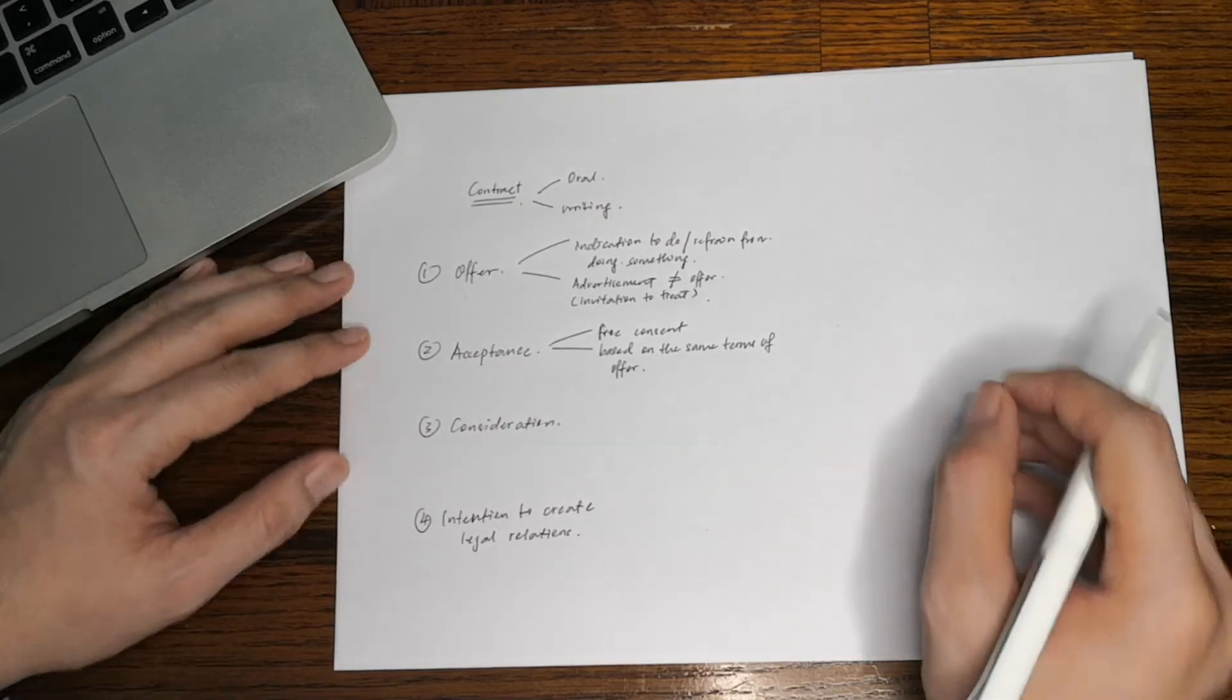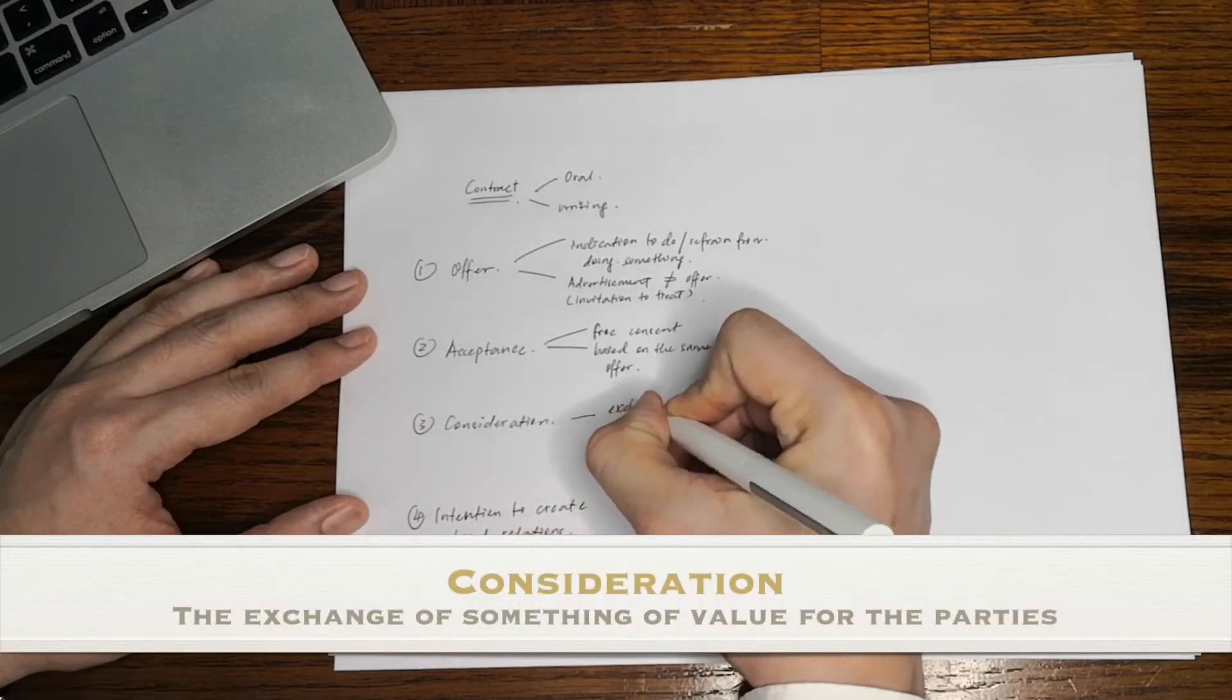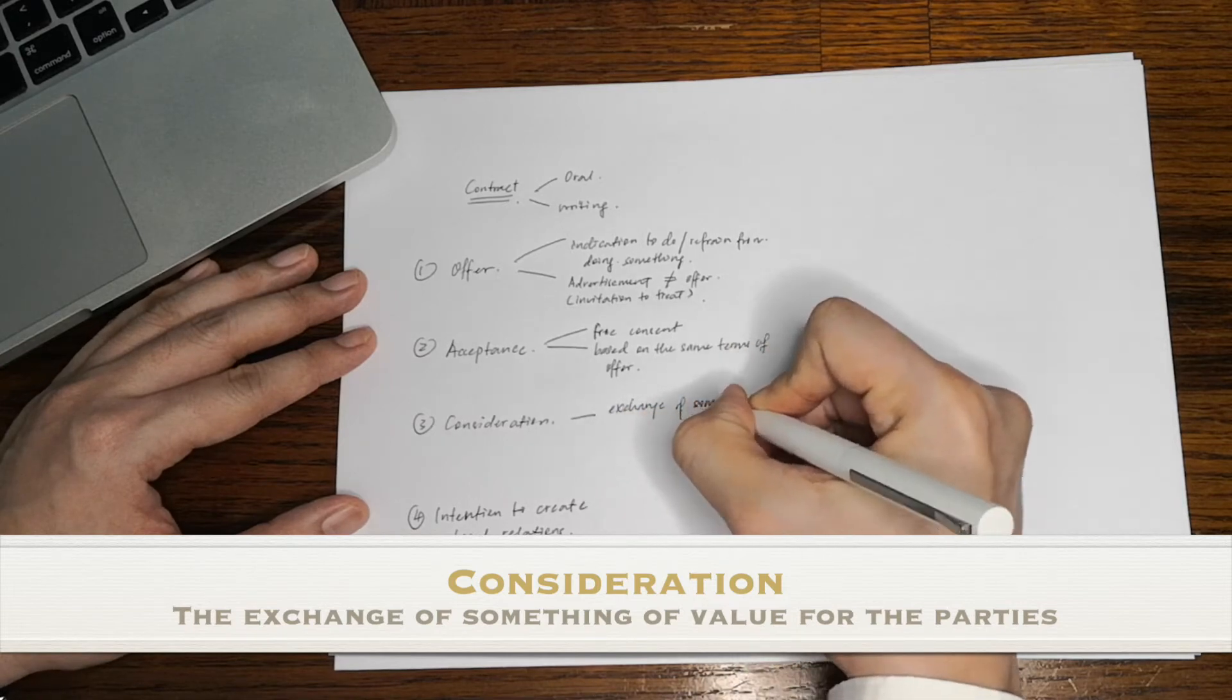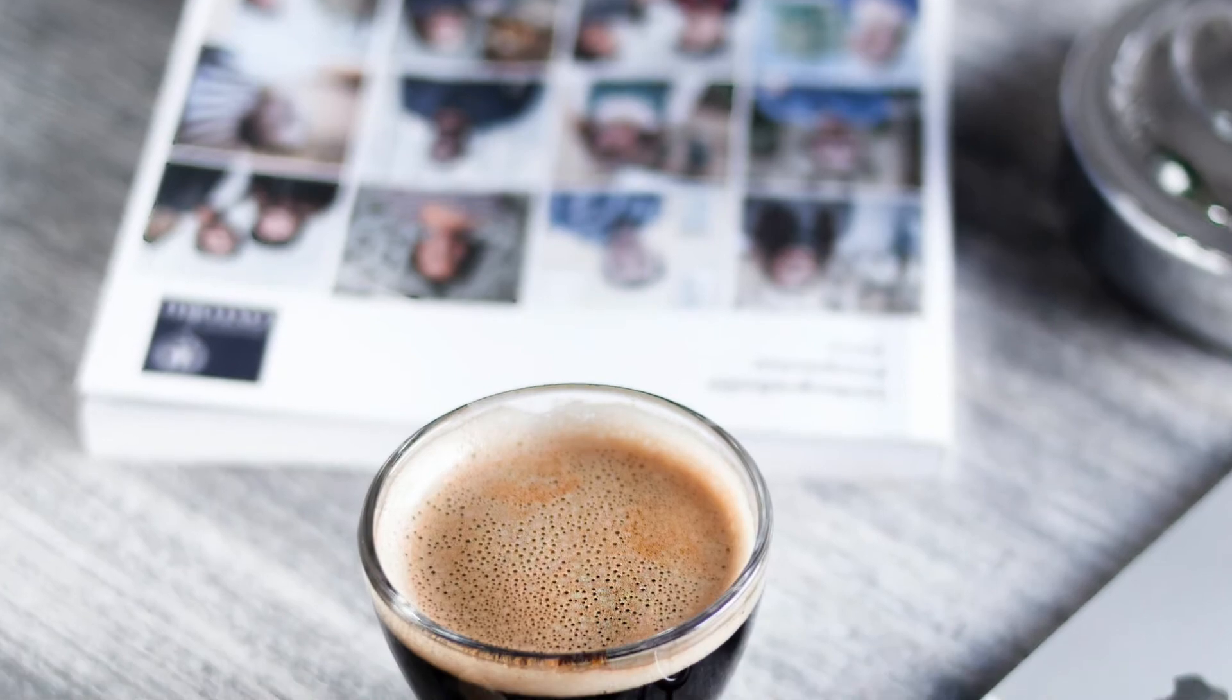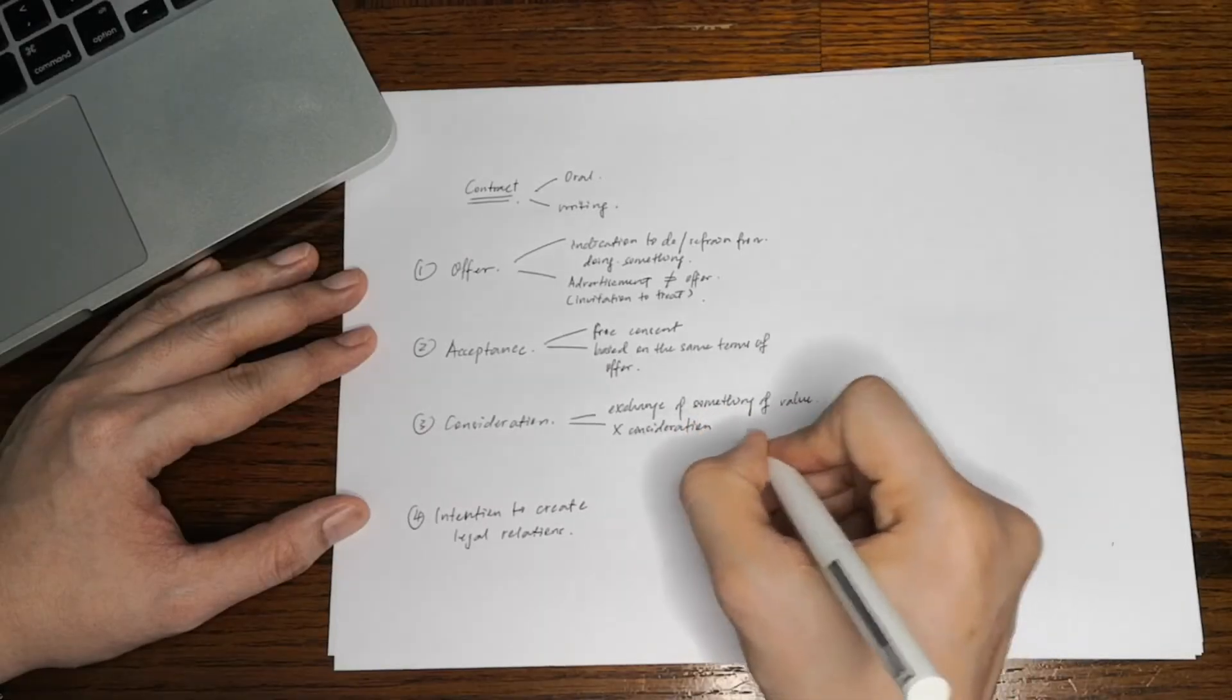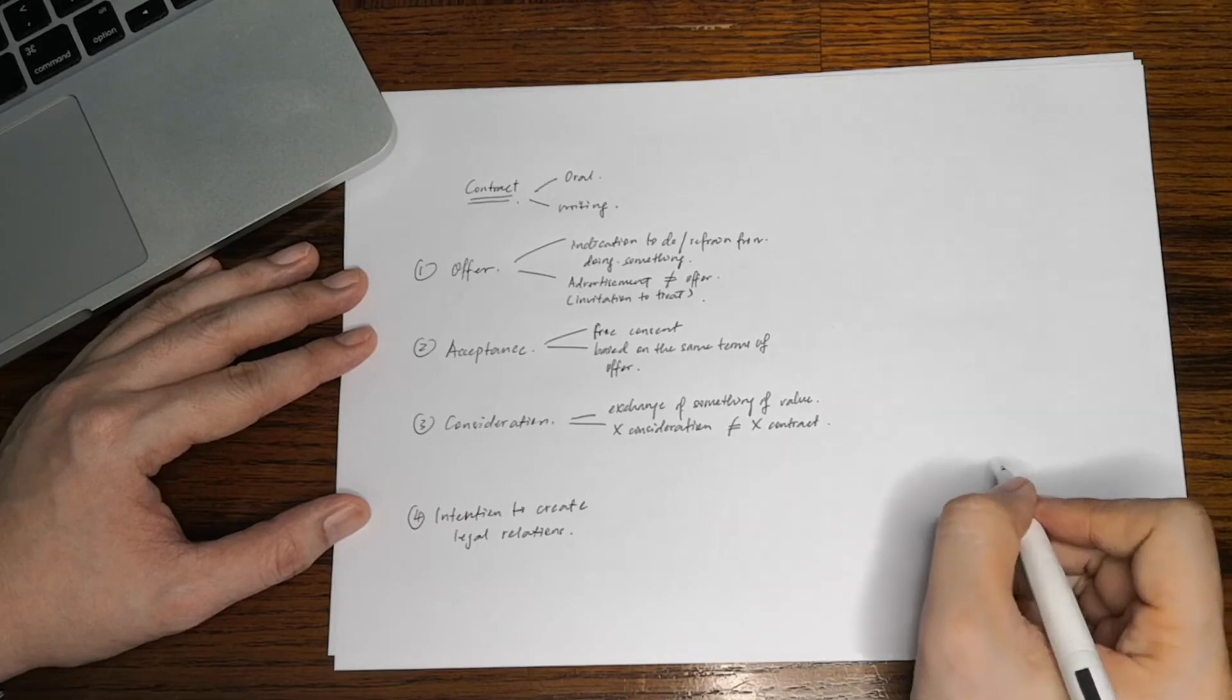Consideration is simply the exchange of something of value for the parties. Simply put, it has to be something that the parties have agreed to exchange at the time the contract was formed. Ergo, the americano and the 20 ringgit.